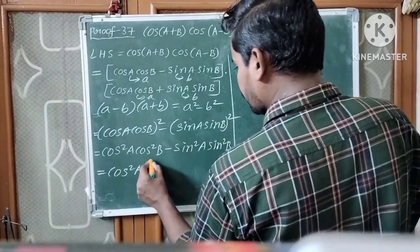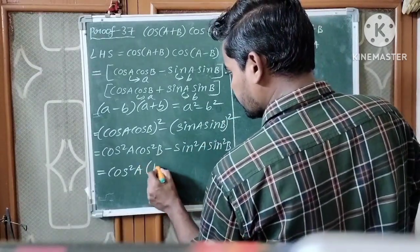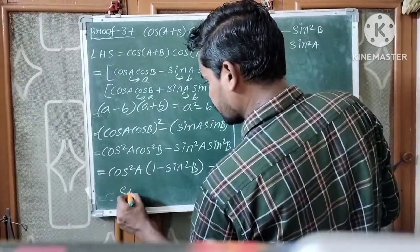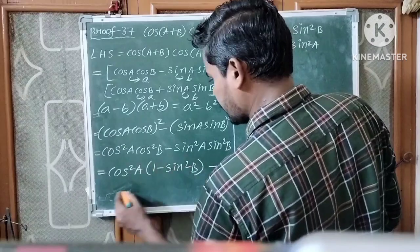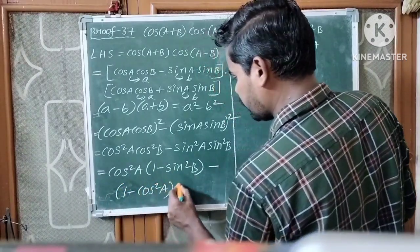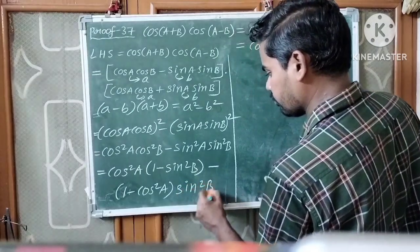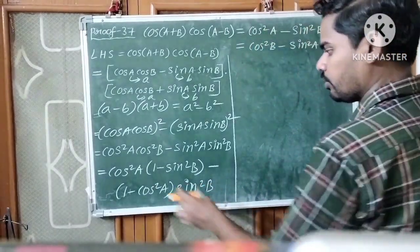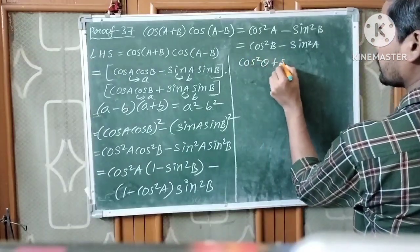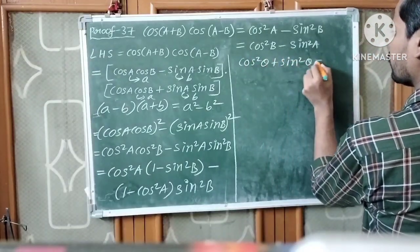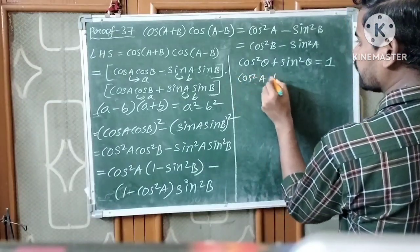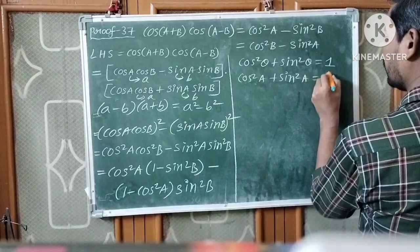cos²A·cos²B can be rewritten using 1 minus sin²B in place of cos²B, and sin²A·sin²B can be rewritten using 1 minus cos²A in place of sin²A. This is because we know that cos²θ + sin²θ = 1.